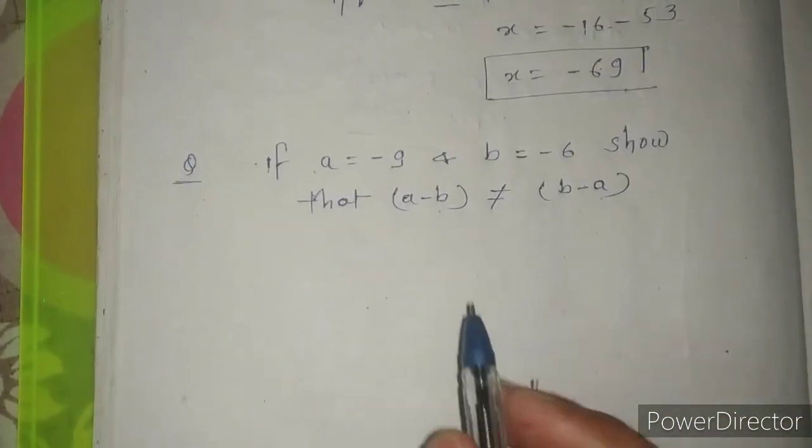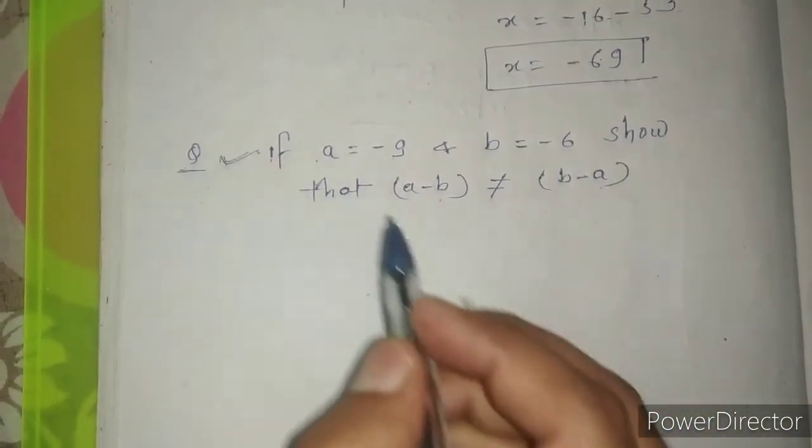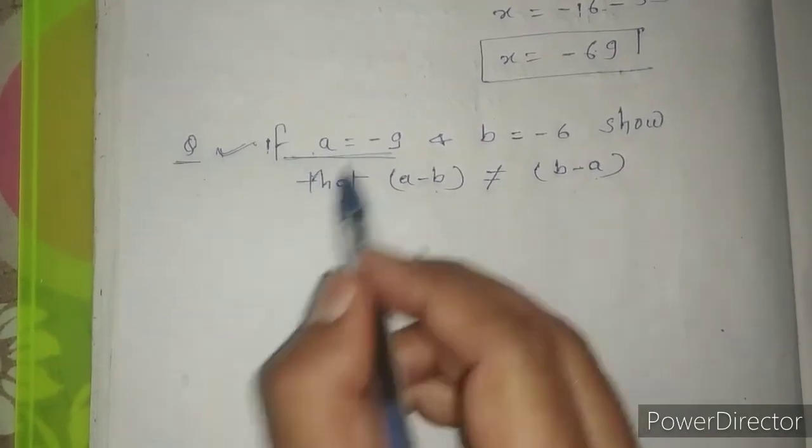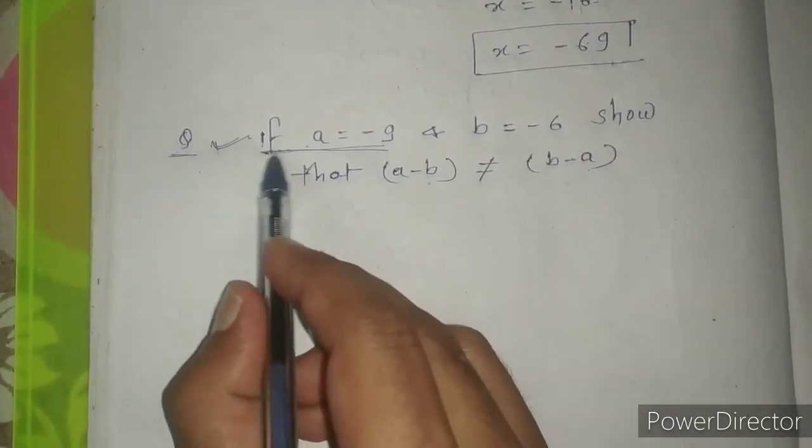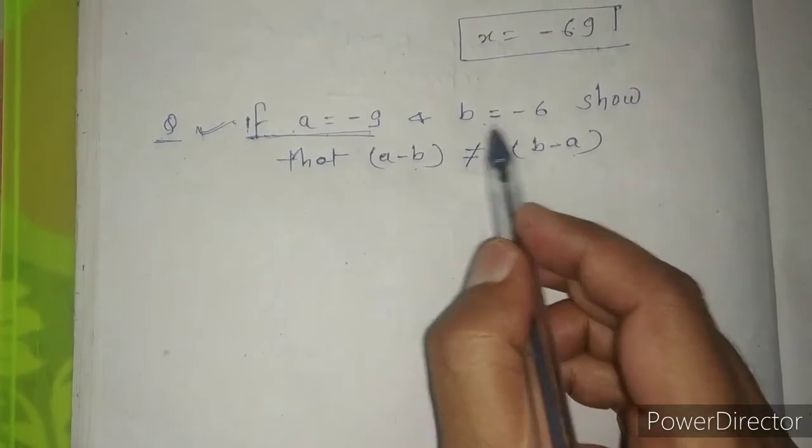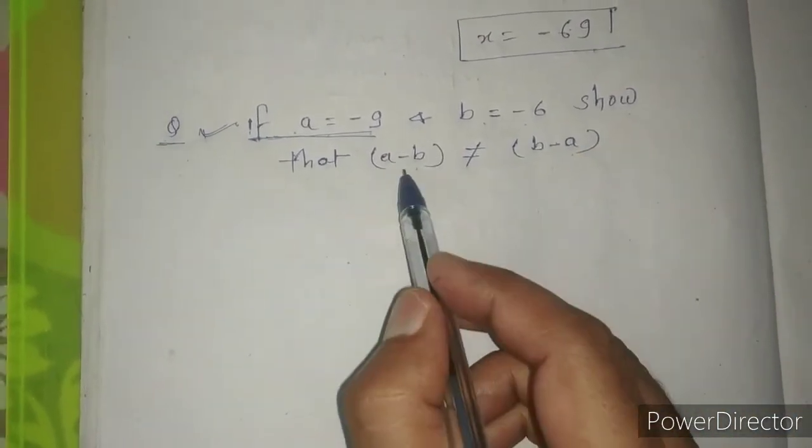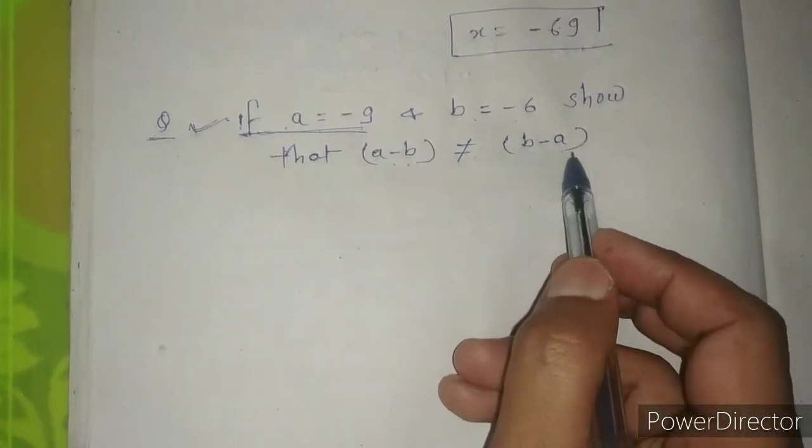Now we will see the second type of question of this unit. Listen, given: if a equals minus 9 and b equals minus 6, show that a minus b does not equal b minus a.